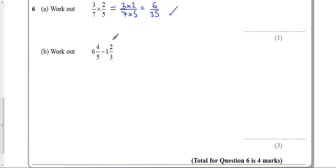This one down here is a little bit tricky but I'm going to convert them into top-heavy fractions. So I'm going to convert 6 and 4 fifths. Well that's 6 wholes so that's 30 fifths plus 4 gives me 34 out of 5.